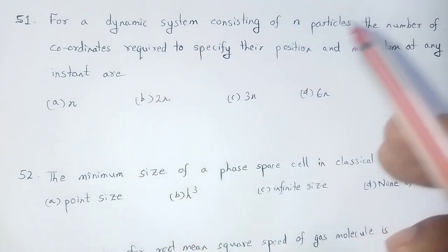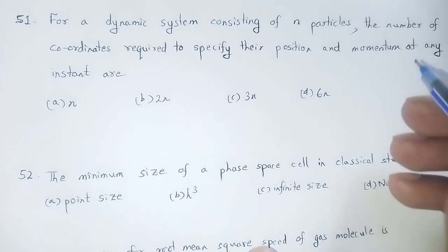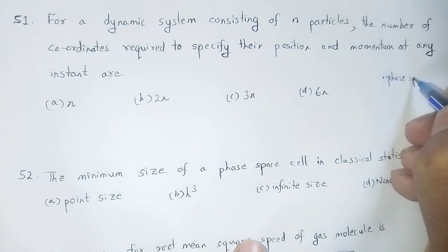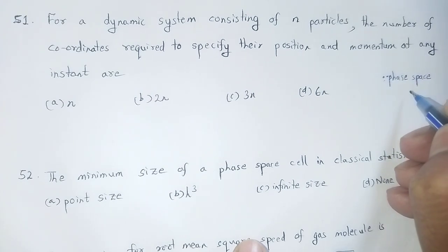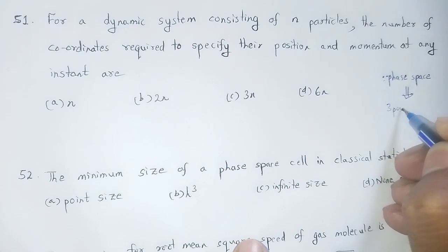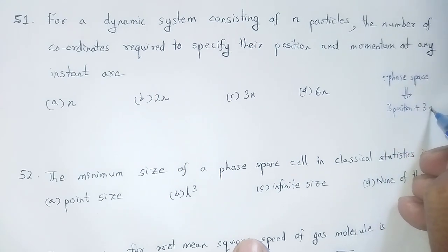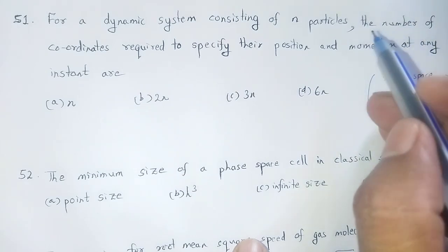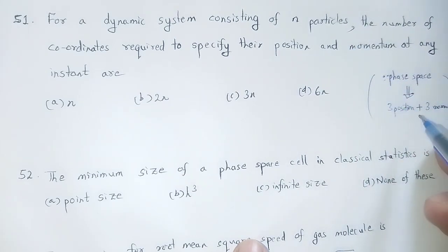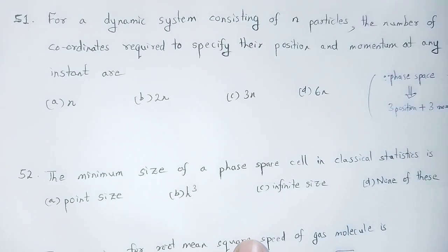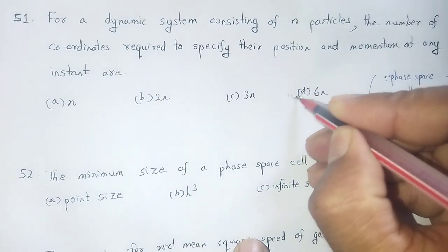If you have to know the dynamic system, you can see the introduction of phase space. Phase space, which is the dynamic system, can easily be found. Phase space includes position plus momentum coordinates. For n number of particles, there are three position and three momentum coordinates each, so 6n number of coordinates are required. Option number D: 6n.